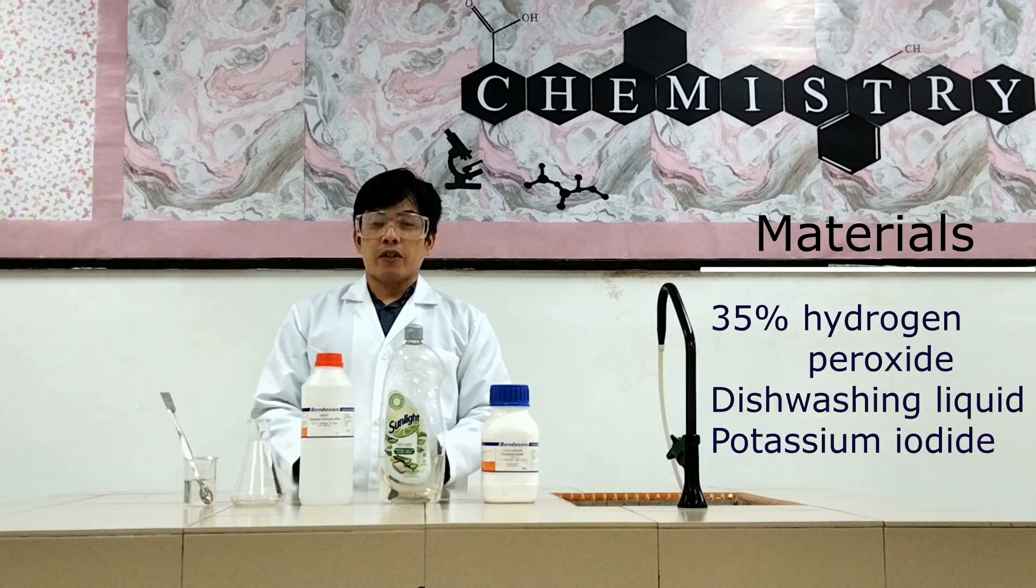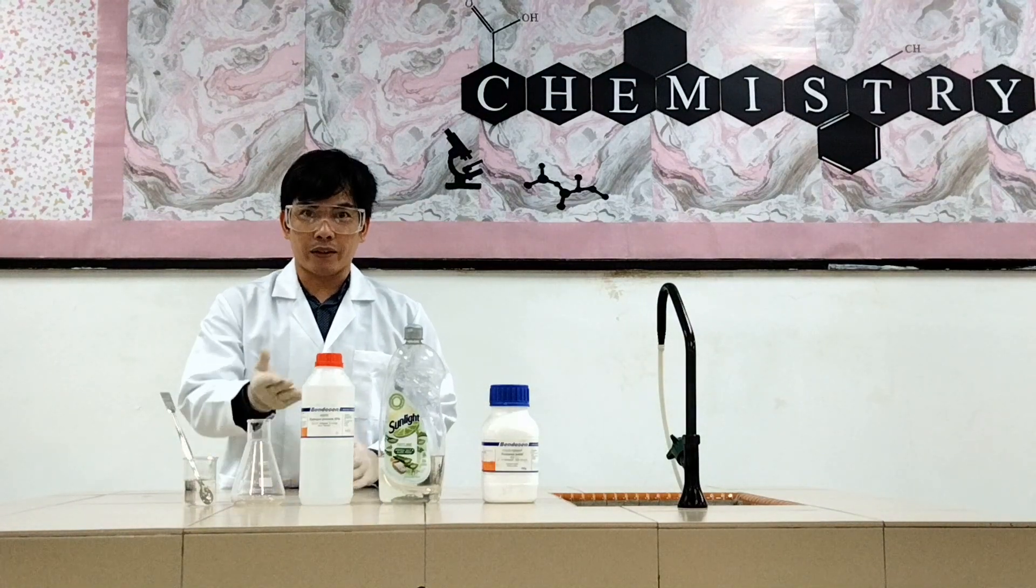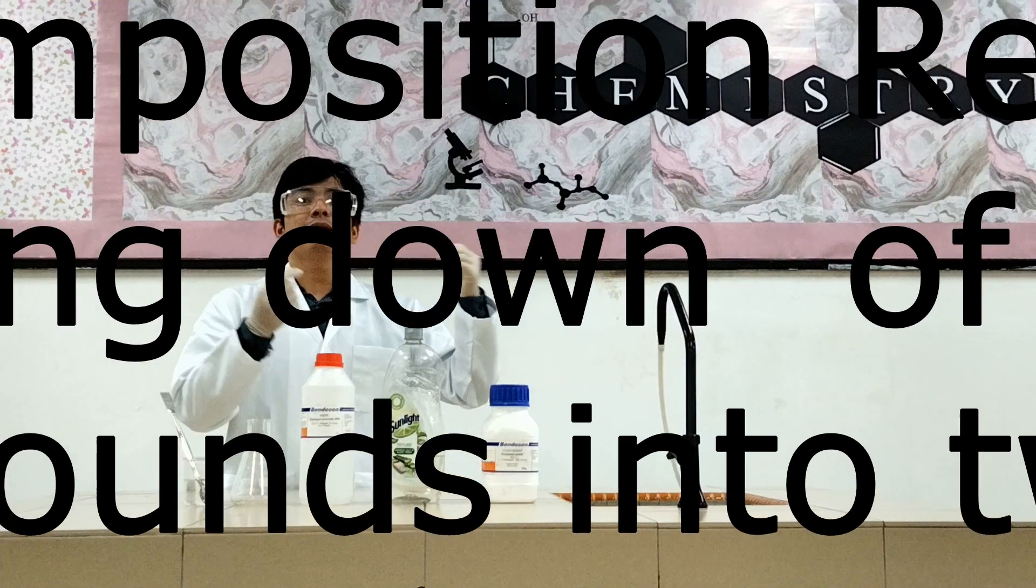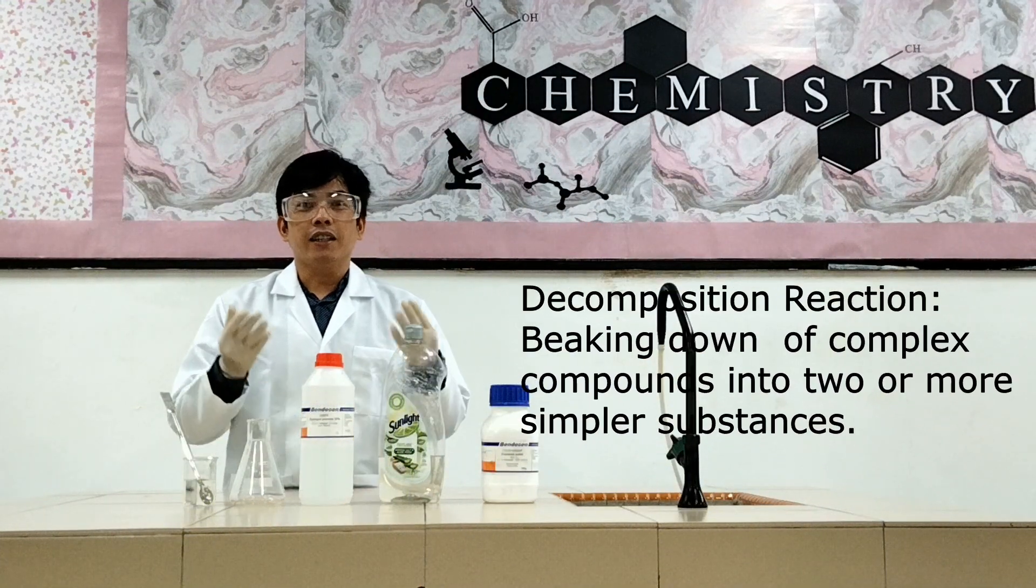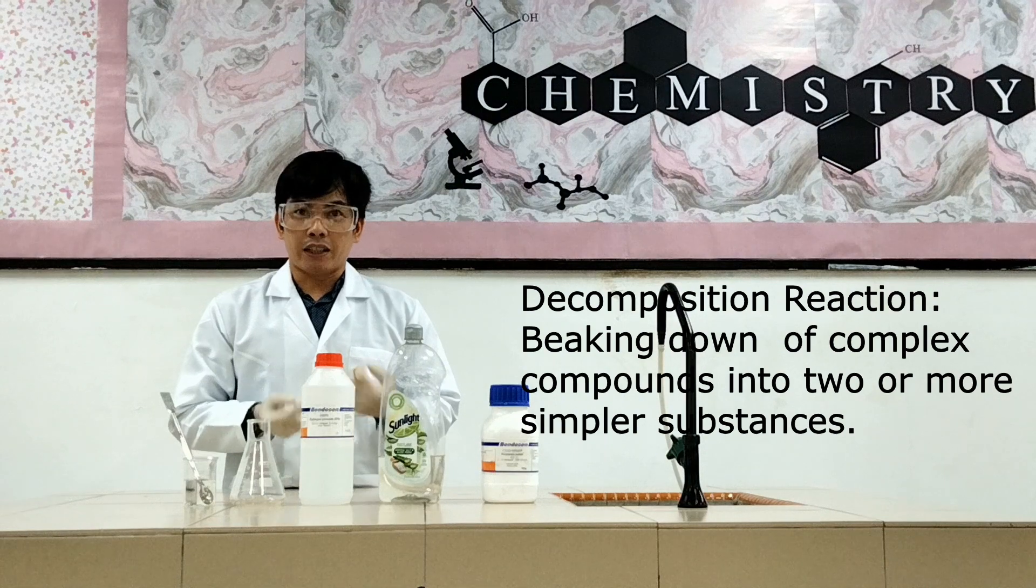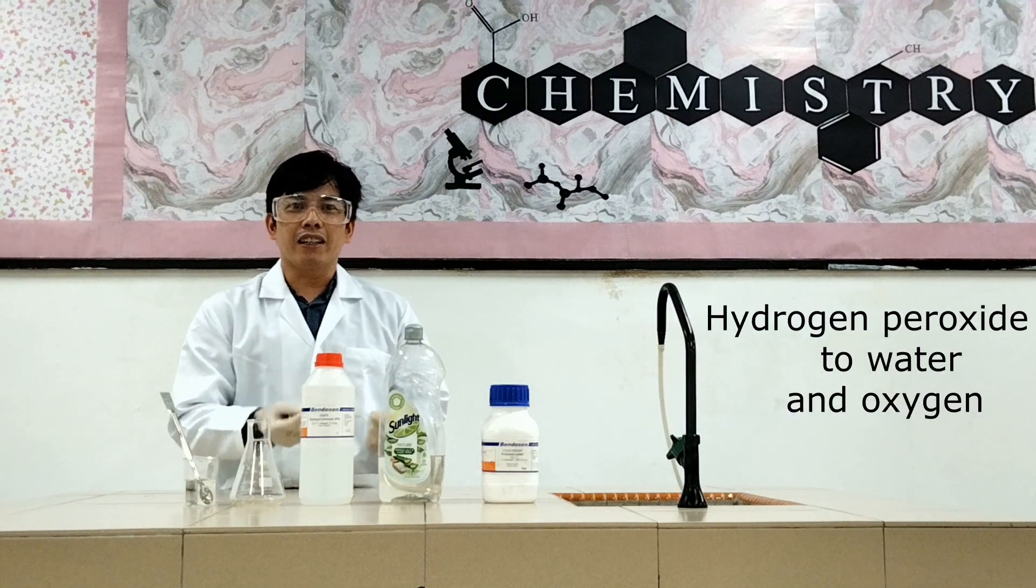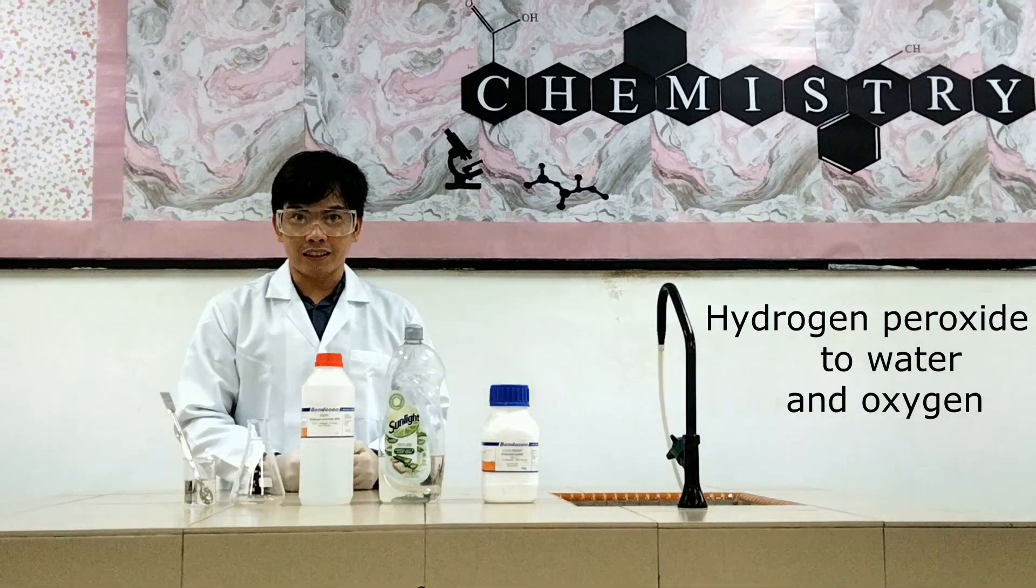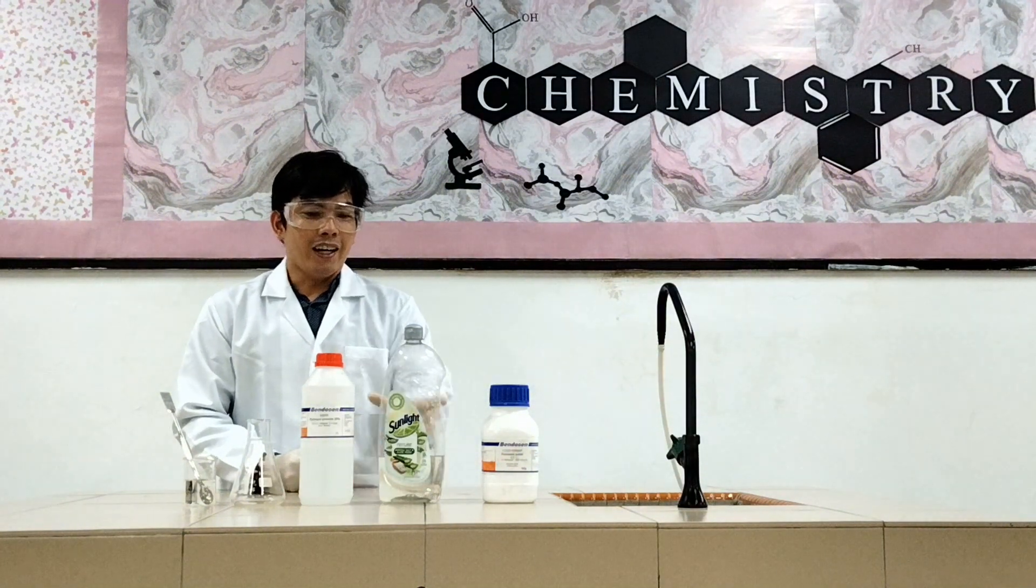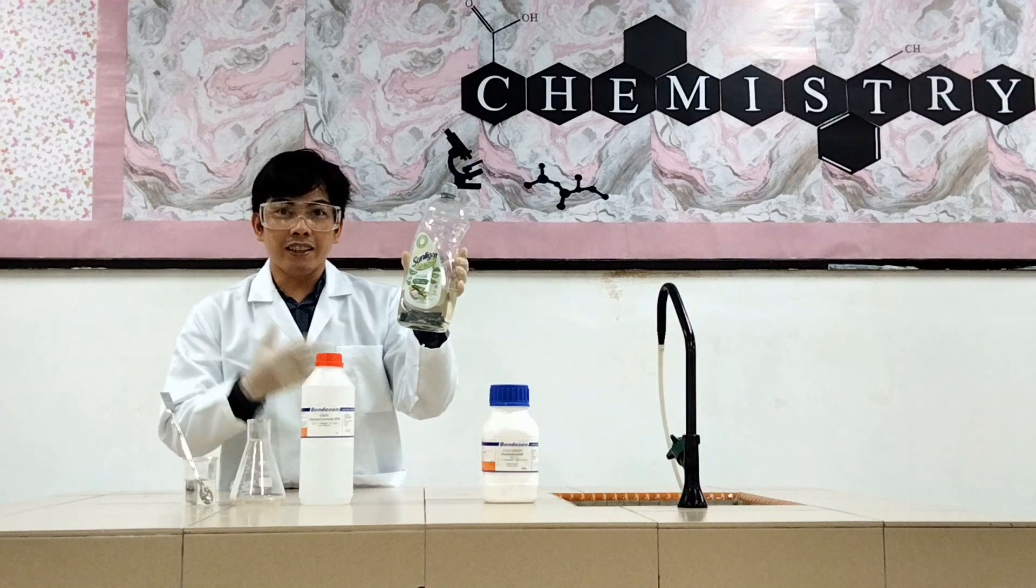In this experiment, you are going to observe the decomposition of hydrogen peroxide. Decomposition is breaking down of complex compounds into smaller or simpler compounds. So in this case, it is hydrogen peroxide and it will make water and oxygen as the products. And we are going to trap the oxygen since it is a gas.